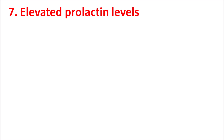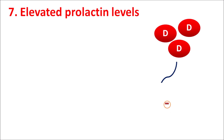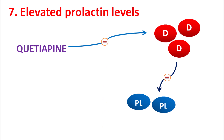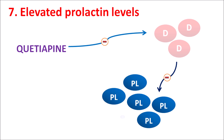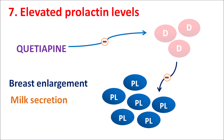The seventh precaution is elevated prolactin levels. Dopamine is an important neurotransmitter that controls prolactin levels. Many antipsychotics can reduce dopamine levels, thereby raising prolactin levels. Quetiapine blocks D2 receptors, thereby reducing dopamine action. When dopamine's inhibitory effect on prolactin is removed, excessive elevation of prolactin leads to hyperprolactinemia. This hyperprolactinemia may result in breast tenderness, breast enlargement, milk secretion, and nipple discharge, all of which can be observed in men due to elevated prolactin levels.